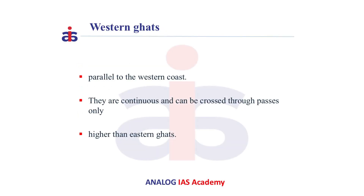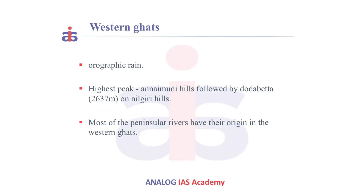Now let us see about Western Ghats. The Western Ghats lie parallel to the Western coast. They are continuous and can be crossed through passes only. Also, Western Ghats are higher than Eastern Ghats.